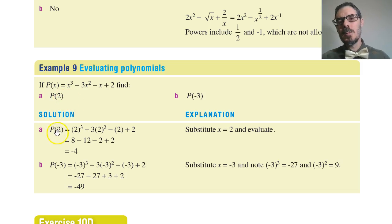That means substitute 2 into the expression wherever x is. So that becomes 2 cubed minus 3 times 2 squared minus 2 plus 2.